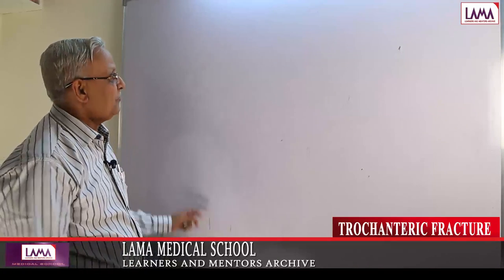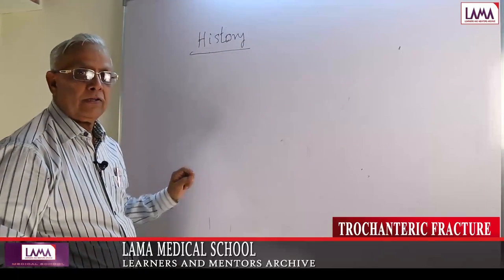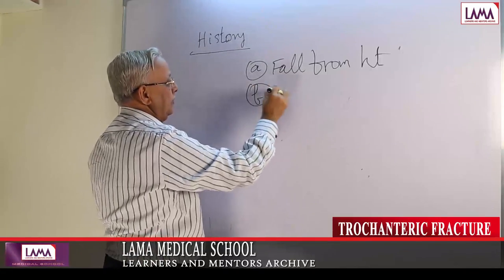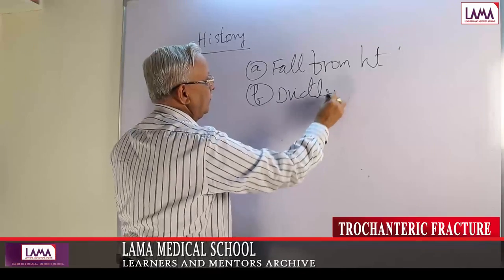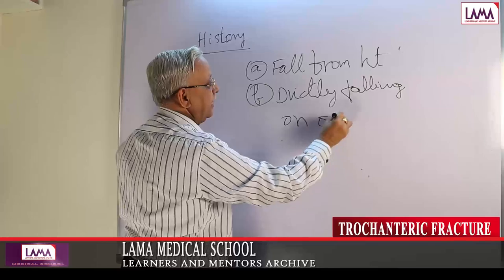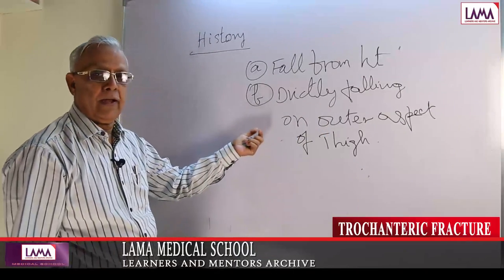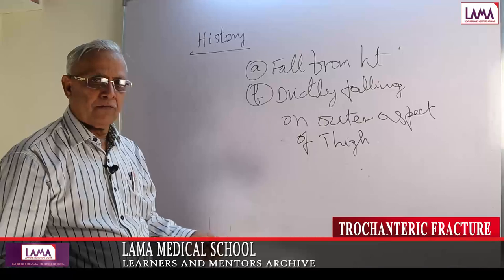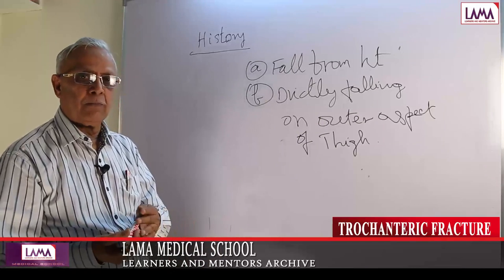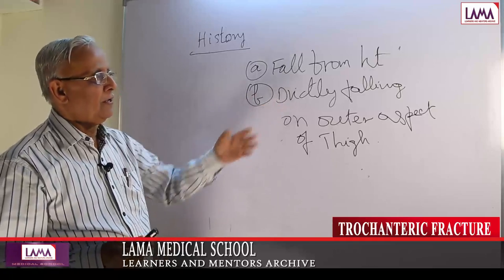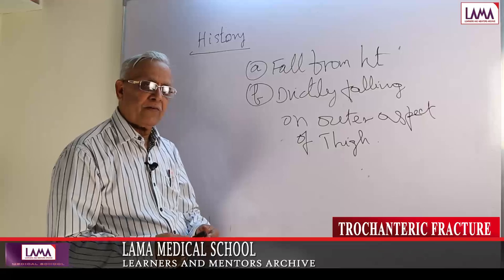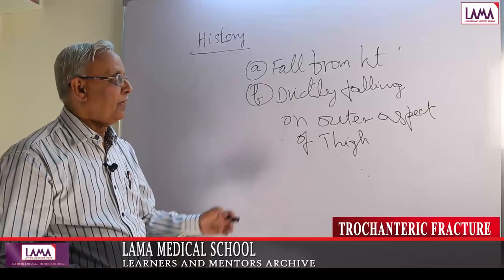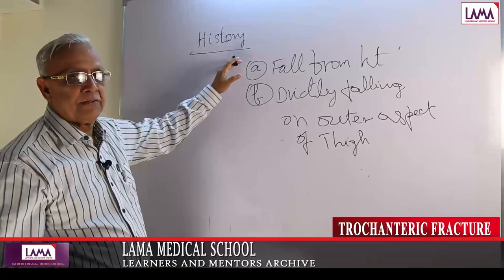Signs and symptoms: history is very, very important. Very often patients fall from a height or land directly on the trochanter, or fall directly on the outer aspect of the thigh. A fall from height can cause many fractures — cervical spine, dorsal spine, dorsal lumbar, lumbar, fracture pelvis, fracture femur, intracondylar fracture, ankle fracture — one among them being a trochanter fracture.